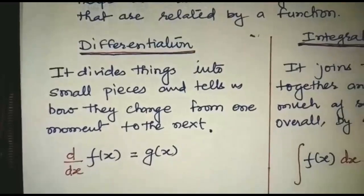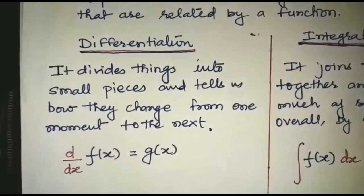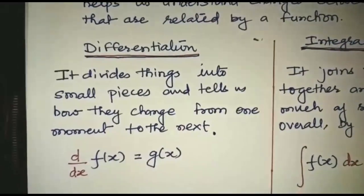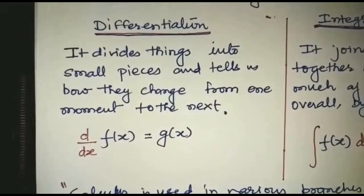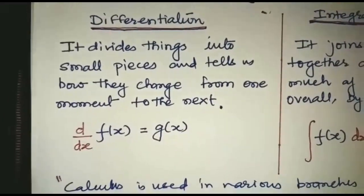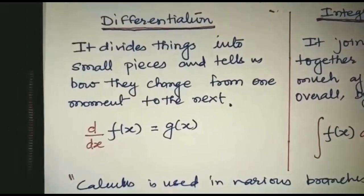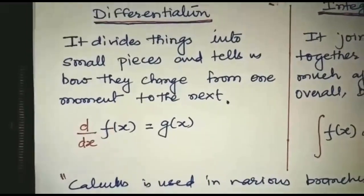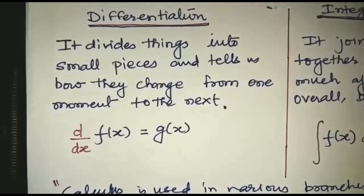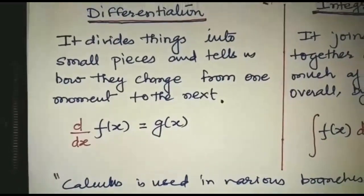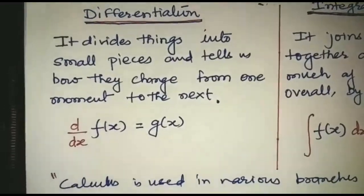Differentiation divides things into small pieces and tells us how they change from one moment to the next. Mathematically it can be given as d by dx of f(x) equals g(x), where d by dx is a differential operator which operates on function of x which results in a new function g(x).